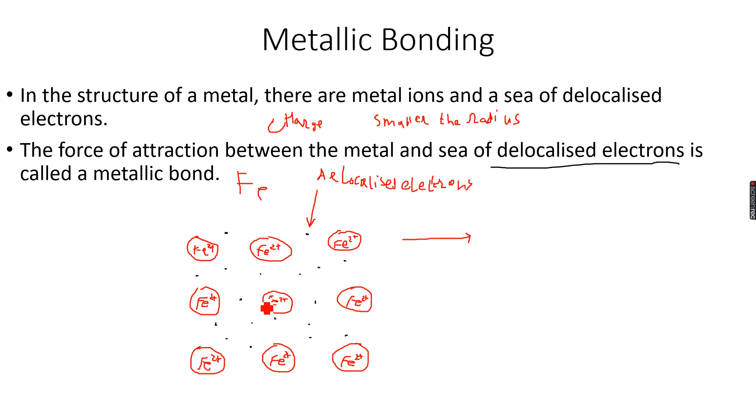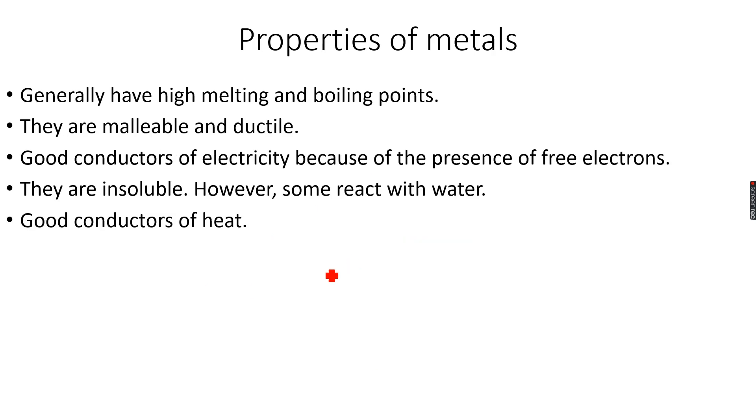And it's also because these electrons gain energy, so they move very fast and they collide very strongly with the ions. And therefore, there are stronger vibrations. And due to these vibrations, metals are good conductors of heat.